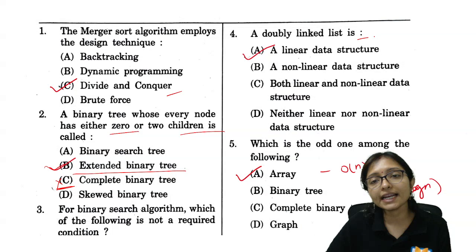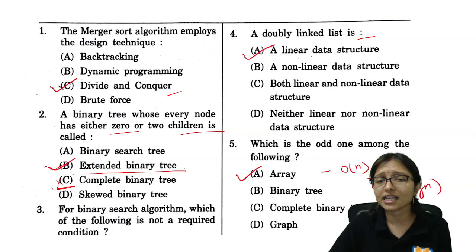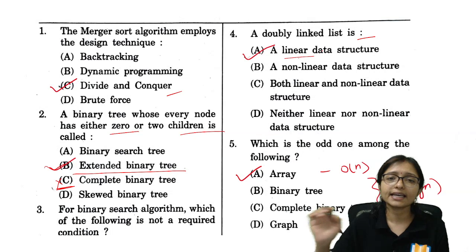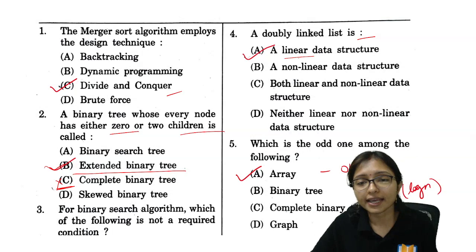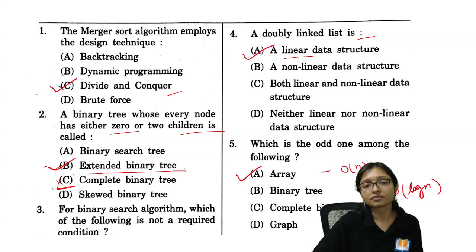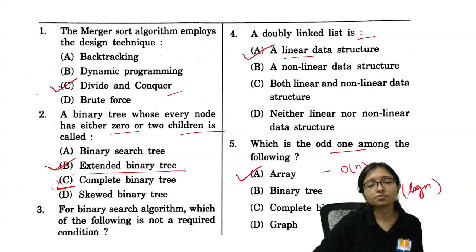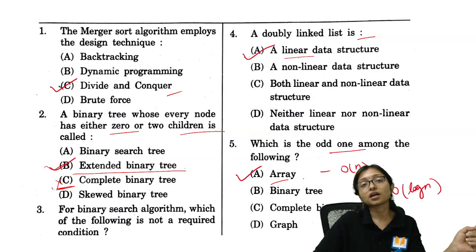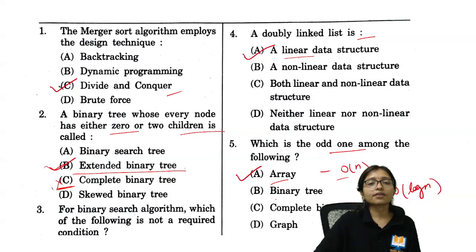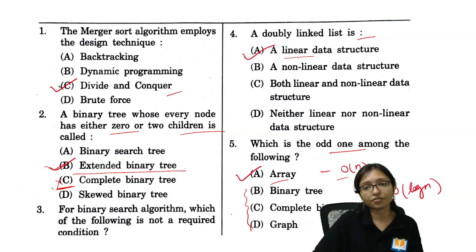Next: a doubly linked list is obviously a linear data structure. Next: among array, binary tree, complete binary tree, and graph — the odd one out is array, because the traversal time of an array is O(n), while binary tree and graph traversals are not O(n).